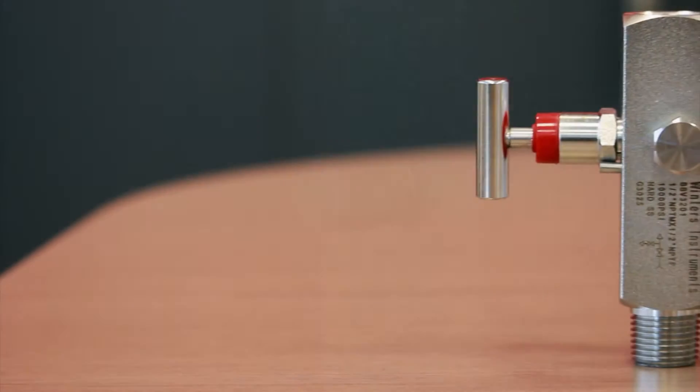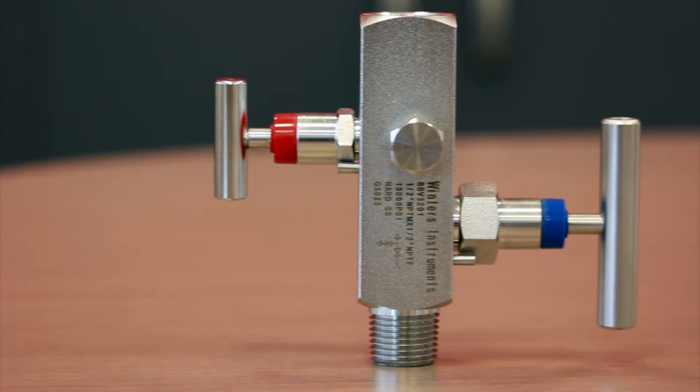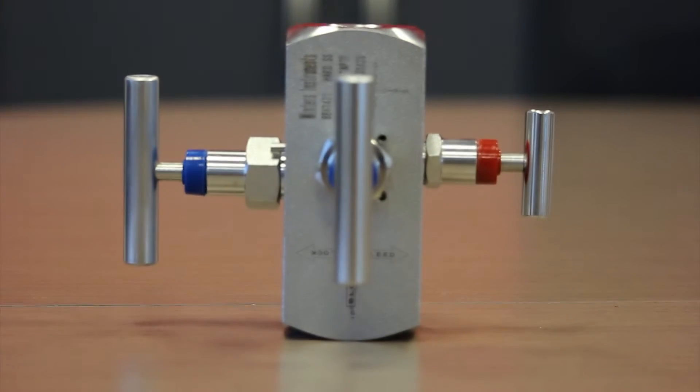Our double block and bleed allows you to isolate the media, while at the same time controlling the venting that's still up in the pressure instrument.